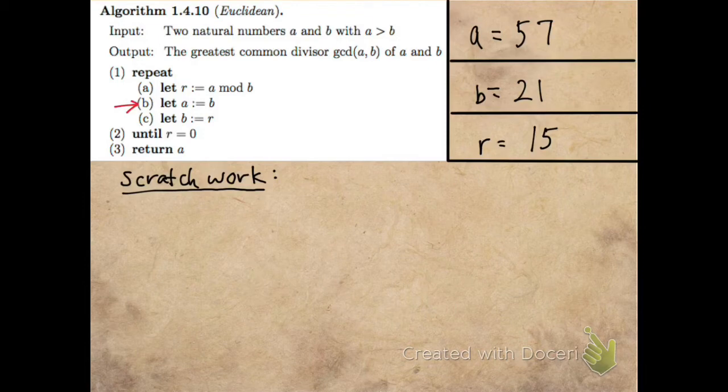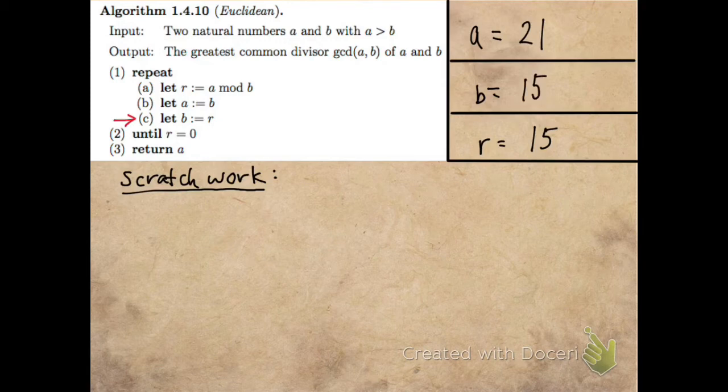Next, I let A equal B, and I'll let B equal R. So if you notice, I just shifted those two numbers on the bottom up one notch.